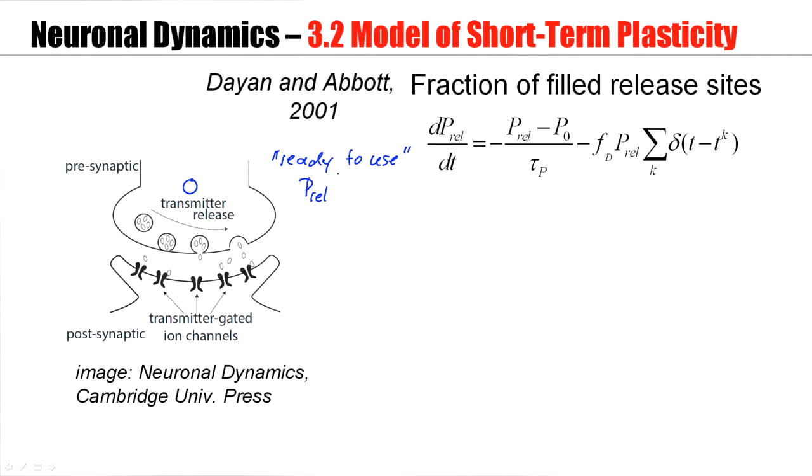And this fraction will be called P-rel. Now in a steady state, transmitter molecules are pushed back into the vesicles, vesicles will dock on the membrane. So there's a steady state where a certain fraction, P-zero, of vesicles are ready to use. But if there's a deviation from P-zero, it takes a time, tau P, to go back to the steady state.